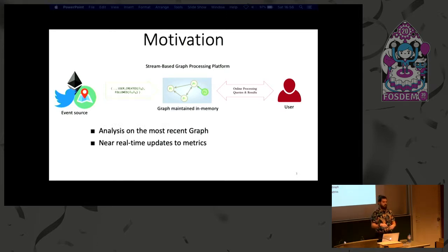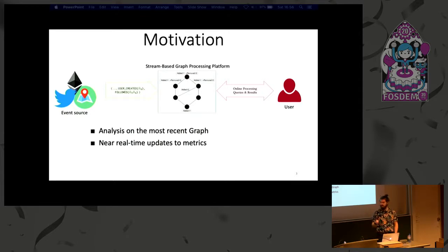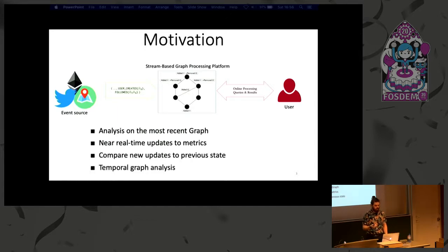This is great if you want to do some analysis on the most recent version of the graph, or if you've got some metric you're interested in monitoring and seeing how it changes over time. What we were thinking was: if you've got all these changes coming in and all these problems with keeping your graph in sync and up to date, why don't we just try to keep all of the changes and build a full temporal graph? This in some ways simplifies synchronization, but also allows us to compare the newest state to all previous versions and do proper temporal queries.